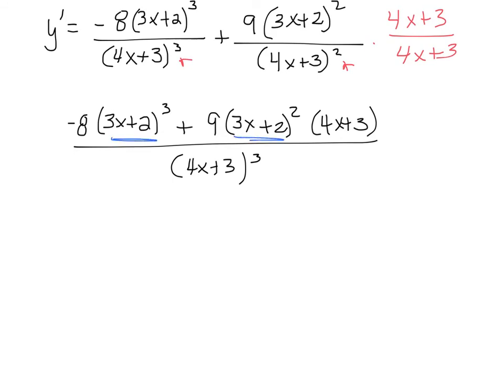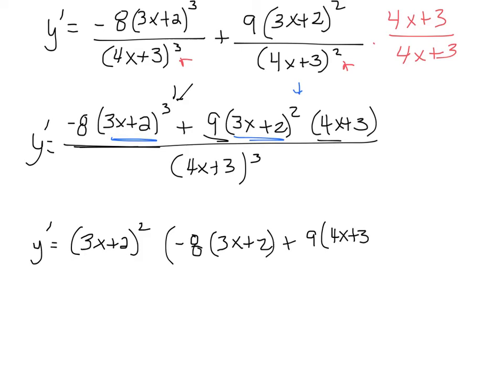have (3x plus 2)² in common, so I'm going to factor that out. I factor out (3x plus 2)², so that leaves me here with minus 8 times another (3x plus 2) because there were 3 of them, so I have another one left. Over here, that just simply leaves me with plus 9 times (4x plus 3), all over (4x plus 3)